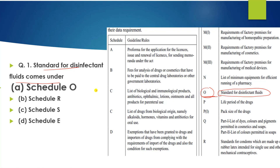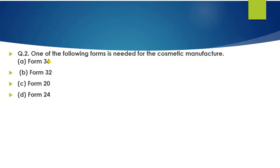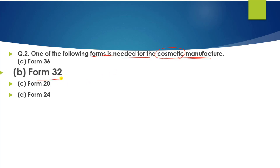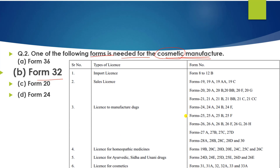Question number 2: Which form is needed for cosmetic manufacture? The correct answer is Form number 32. Form number 32 is the license for cosmetics.